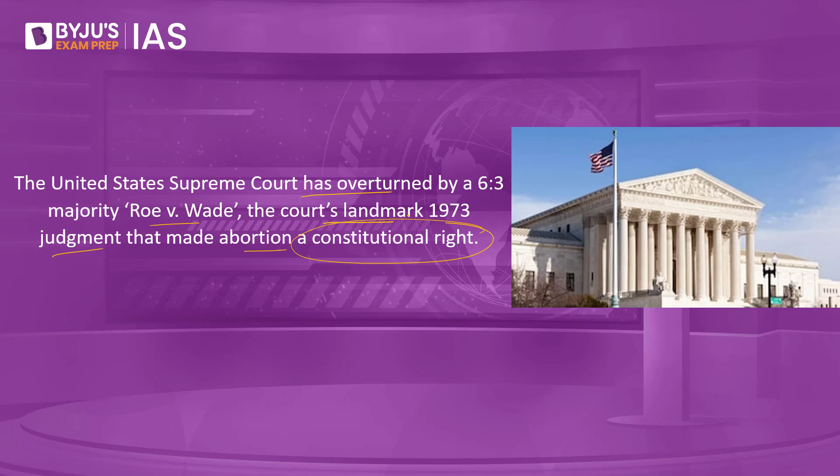The authority to regulate abortion is returned to the people and their elected representatives. In this backdrop, we will understand the historical 1973 landmark judgment, what has been overturned in the present situation, the appointment procedure for Supreme Court judges, the political consequences, and the pro-abortion and anti-abortion arguments as well as the global ramifications.